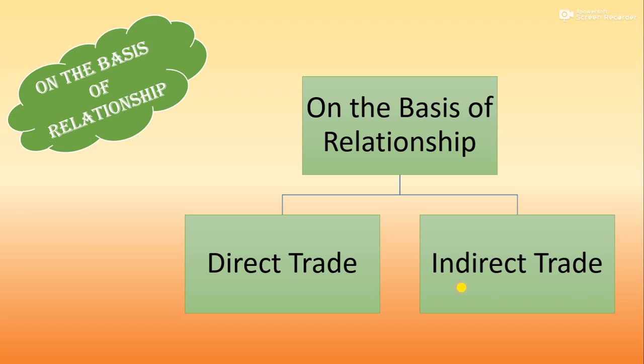Ab indirect trade woh trade hoga jiske beech mein middleman aayenge. Indirect trade ko teen categories mein divide karenge. First: producer goods produce karta hai, pehle wholesaler ko deta hai, aur wholesaler consumer ko. Second: producer goods produce karta hai, retailer ko deta hai, aur retailer consumer ko. Third: producer goods produce karta hai, aur woh agent ko deta hai, agent consumer ko deta hai. To indirect trade woh trade hai jahan producer aur consumer ke beech mein koi na koi middleman zaroor aa raha hai.